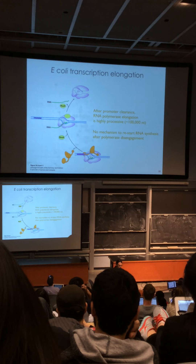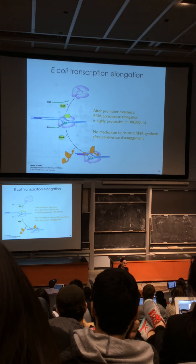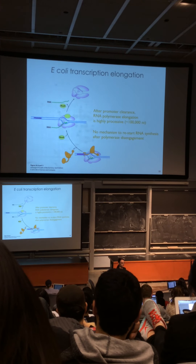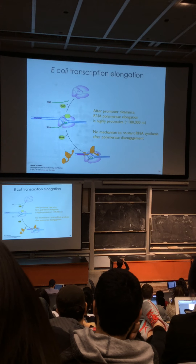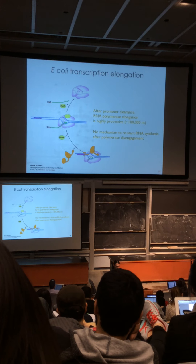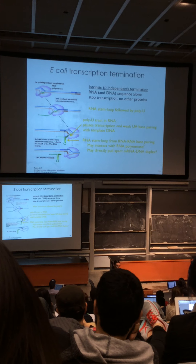After promoter clearance, RNA polymerase elongation is highly processive—even in E. coli, transcripts can be many tens of thousands of bases long. There's no mechanism to restart RNA synthesis after the polymerase disengages entirely: once it terminates, it releases the RNA and cannot continue. There are specific mechanisms that terminate transcription at the end of a gene, and two major mechanisms exist in E. coli.